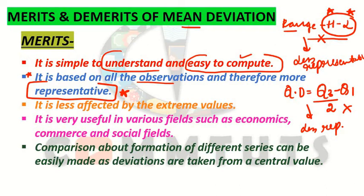So to recap: the first merit was that it is simple to understand and easy to calculate. The second merit is that it is based on all the observations and therefore more representative. The third merit is that it is less affected by the extreme values. Extreme values means the highest and the lowest values in your series. Mean deviation is not greatly affected by them because all items are considered here, so it is less affected by extreme values.